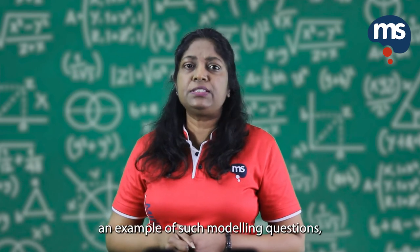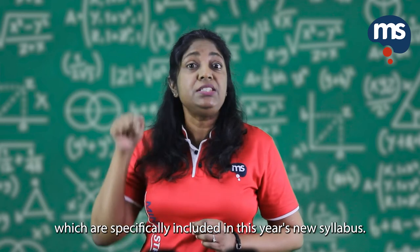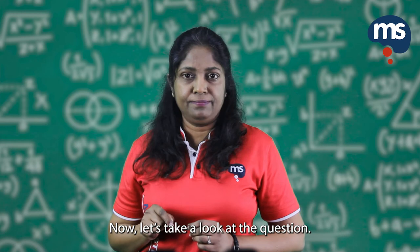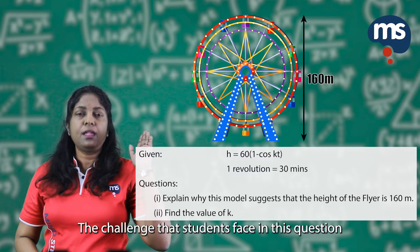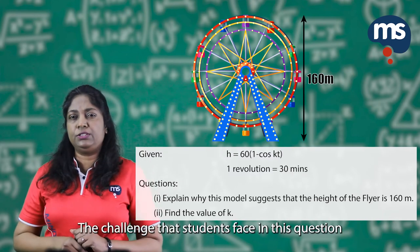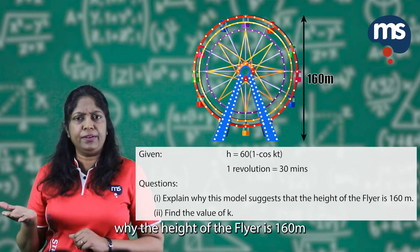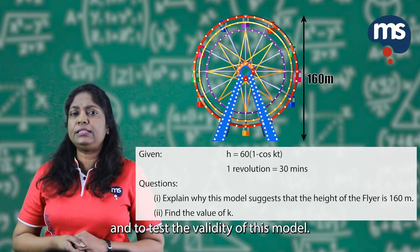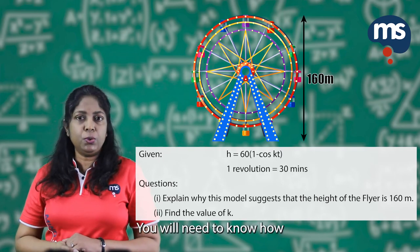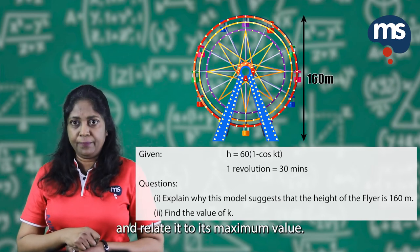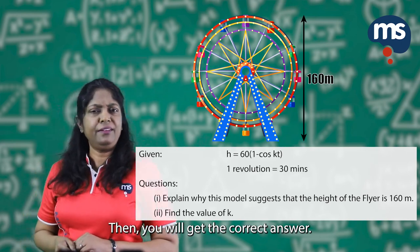Let me share with you an example of such modeling questions, which are specifically included in this year's new syllabus. Now, let's take a look at the question. The challenge that students face is that they need to justify and explain why the height of the flyer is 160 meters and to test the validity of this model. You will need to know how the graph of the function looks like and relate it to its maximum value. Then, you will get the correct answer.